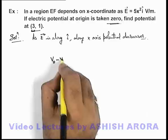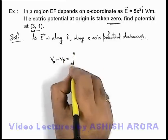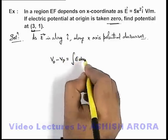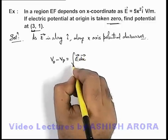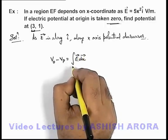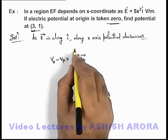V o minus V p should be written as integration of E d x, or more precisely it should be written E dot d x from zero to 3.